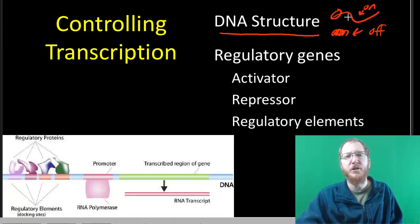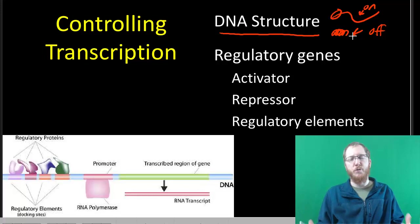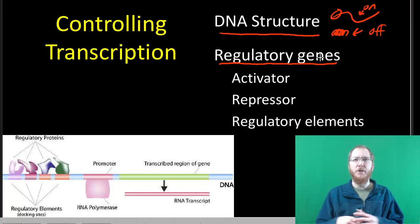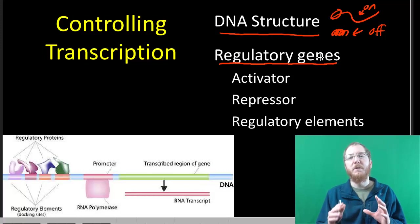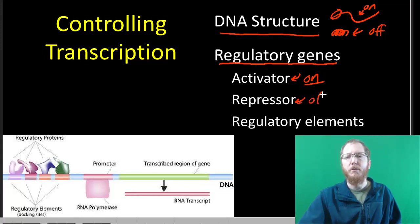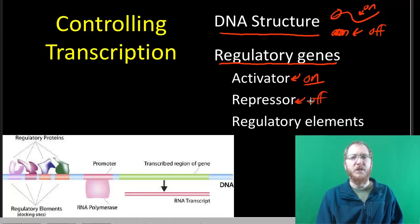You're also going to have a bunch of regulatory genes. These are things that don't make cellular products that are used outside like in the cytoplasm. These are things that will make specific proteins that help control whether or not we're going to turn genes on and off. They're going to create activator proteins, so these ones will be ones that turn transcription on, and they'll make repressor proteins, and these will be proteins that bind and turn transcription off, turn a gene off.